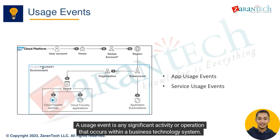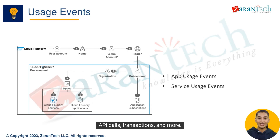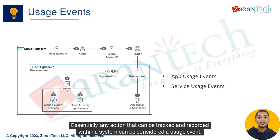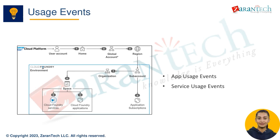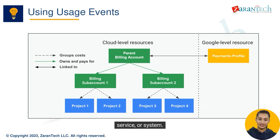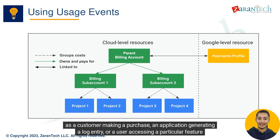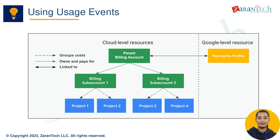A usage event is any significant activity or operation that occurs within a business technology system. It can include actions such as user logins, file uploads and downloads, data modifications, system configurations, API calls, transactions, and more. A usage event refers to an occurrence or action that generates data related to the usage of a product, service, or system — such as a customer making a purchase, an application generating a log entry, or a user accessing a particular feature of a software application.